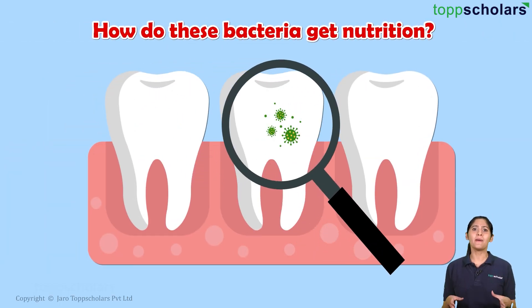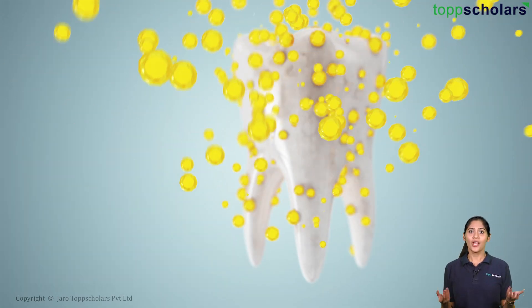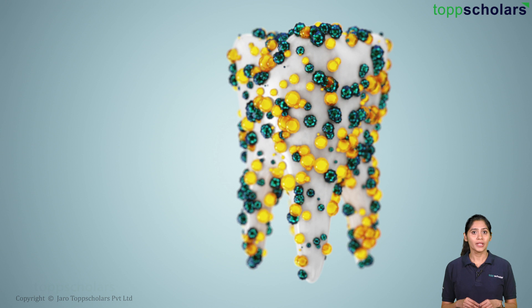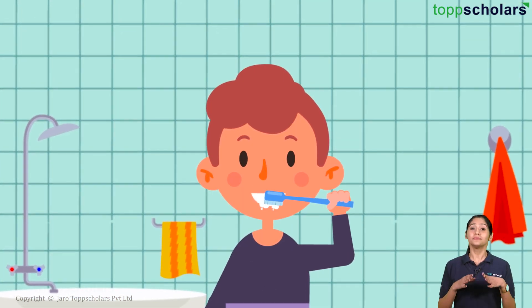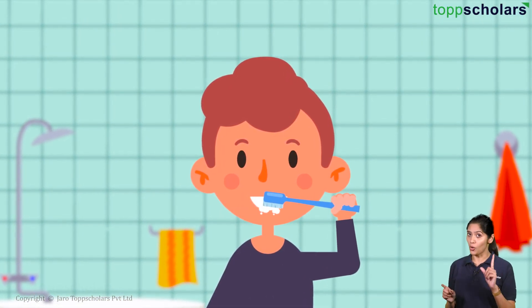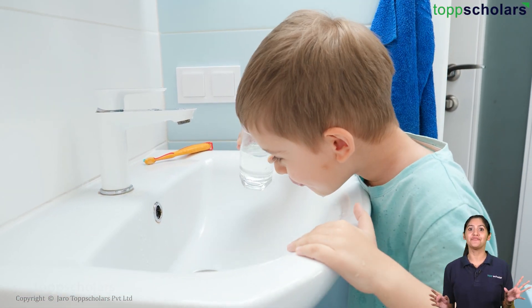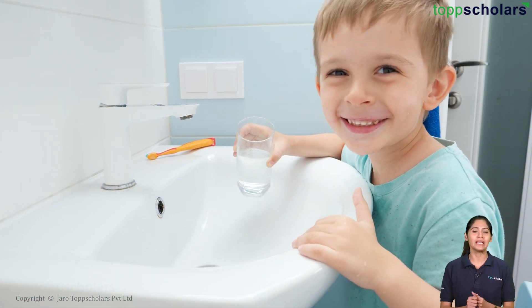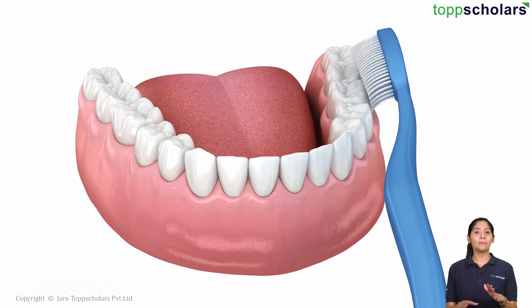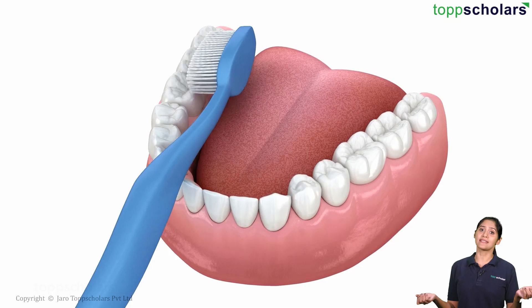How do these bacteria get nutrition? From the food particles that stick to your teeth. Thus, it is advised to brush your teeth twice daily and also rinse your mouth with water every time after you eat. Brushing the teeth after eating removes the plaque before the bacteria produce acids.